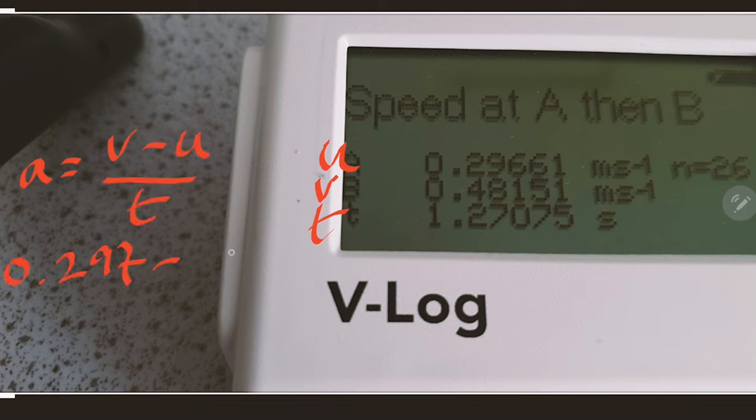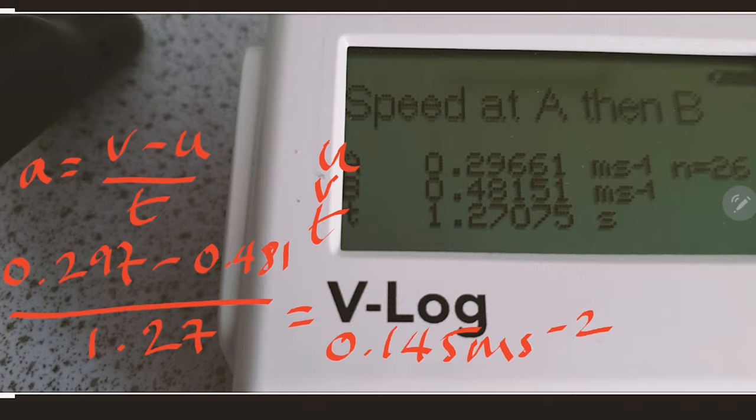Use the acceleration equation. Acceleration is changing speed over time. Numbers in. To three significant figures, 0.145 meters per second squared.